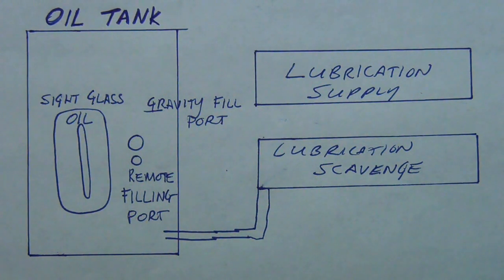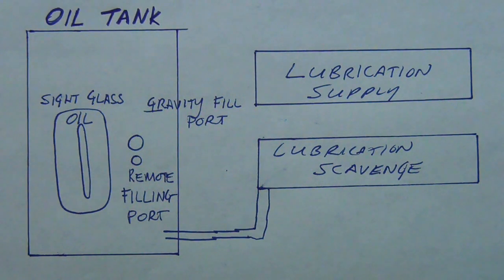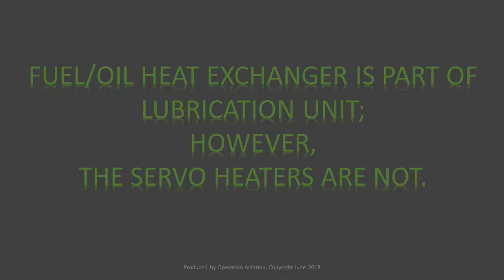On the scavenge circuit, you also have plugs with screens. You have the fuel heater — your main oil-fuel heat exchanger. The servo fuel heater is a side note — it's not really considered part of the lubrication system, though it is there. But the oil-fuel heat exchanger is considered part of it. They serve the same purpose — both components in the scavenge circuit are there to cool the oil before it goes back to the oil tank.